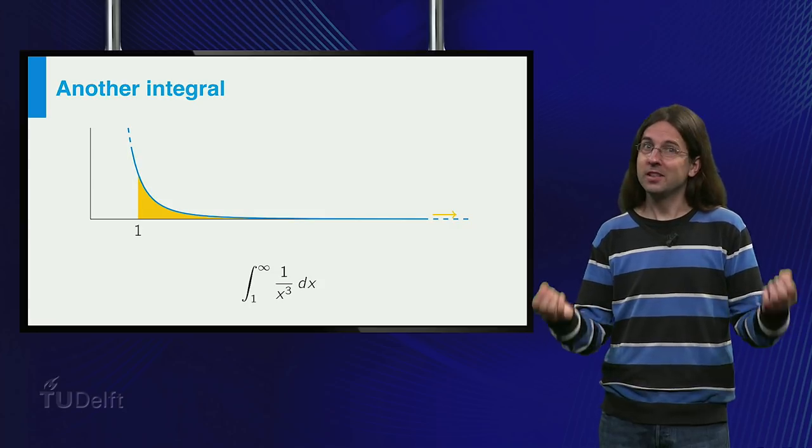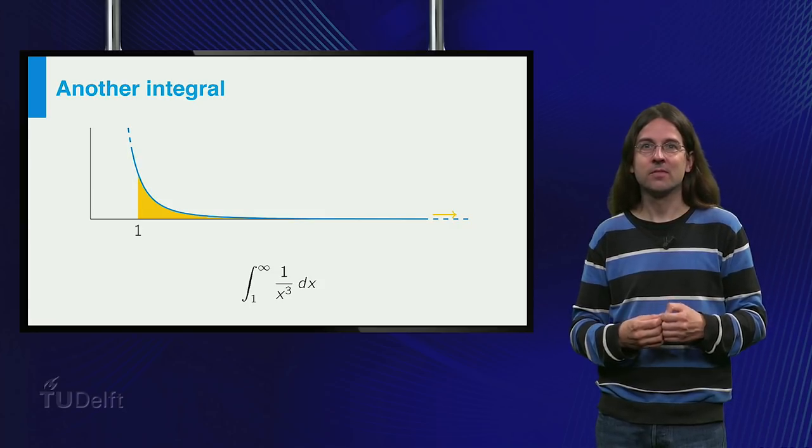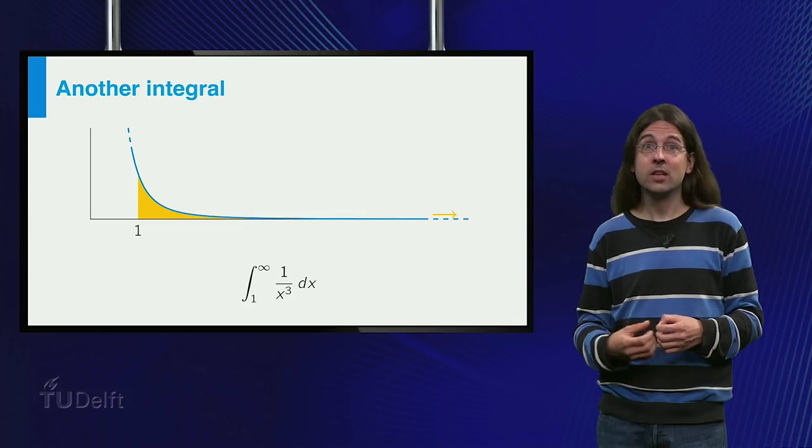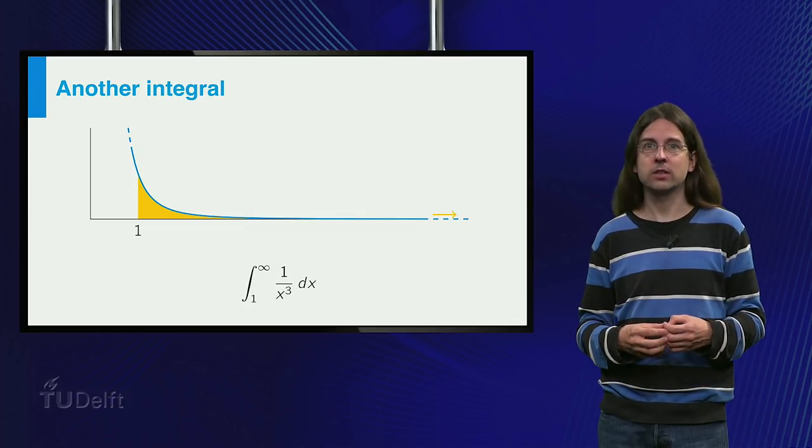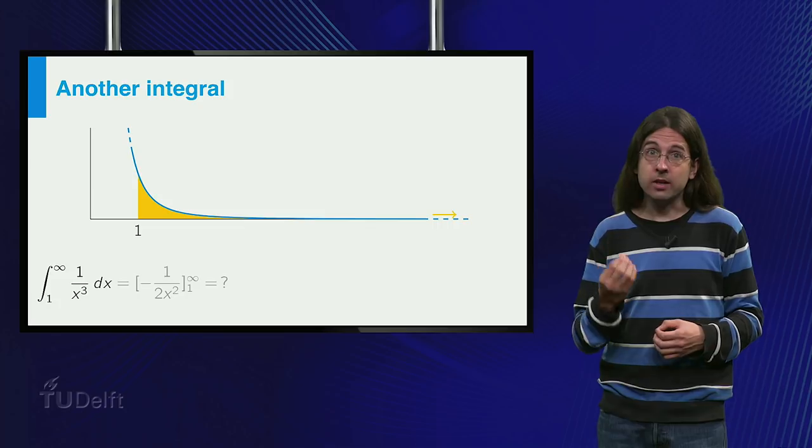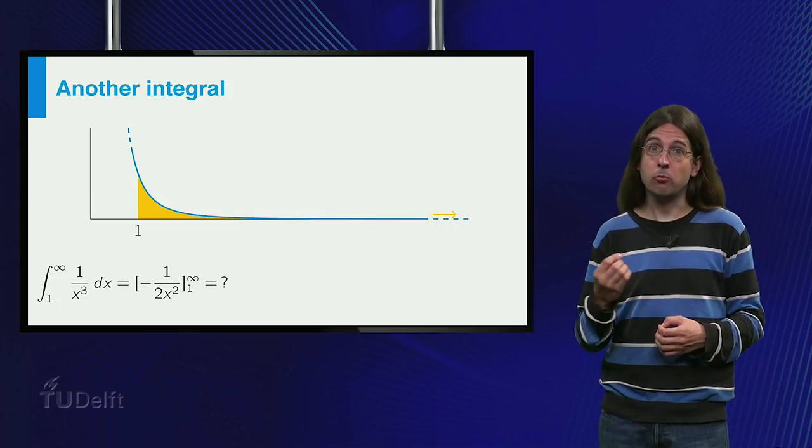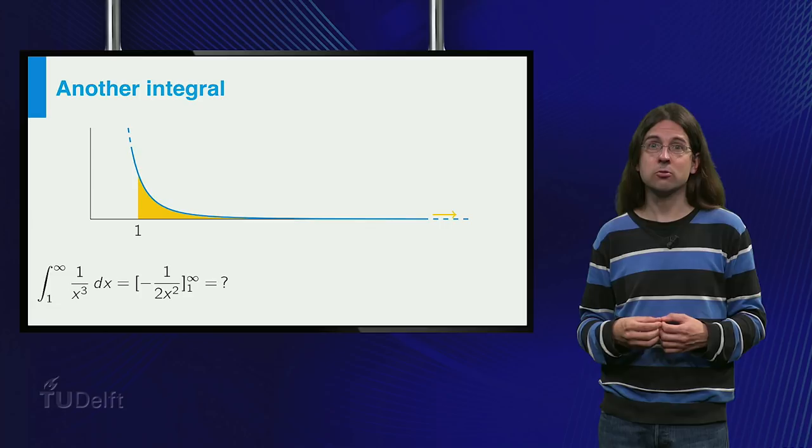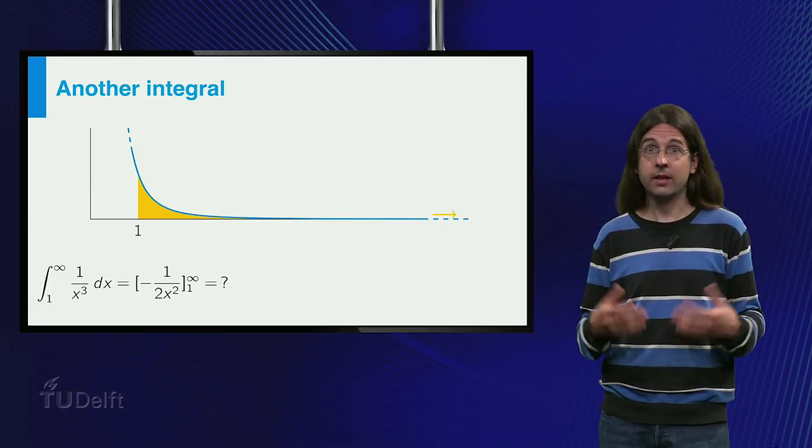Let's be bold and just do the calculation. An antiderivative of 1 over x cubed is minus 1 over 2 x squared. So the integral of 1 over x cubed from 1 to infinity is minus 1 over 2 x squared between 1 and infinity.